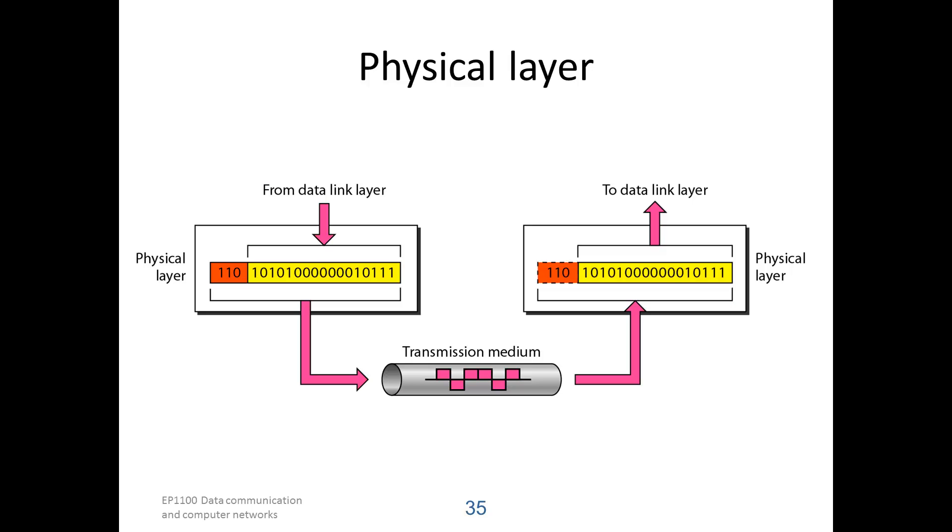I will now go over the different layers. We start from the enabling layer at the physical layer. It will receive data from a data link layer. We will take the bits of the data and send them through the transmission medium.